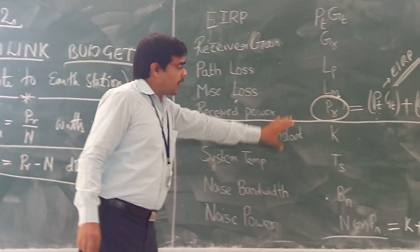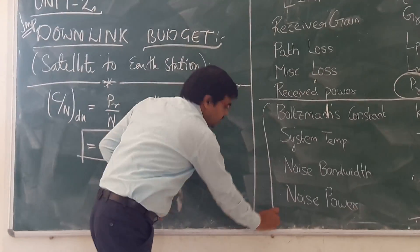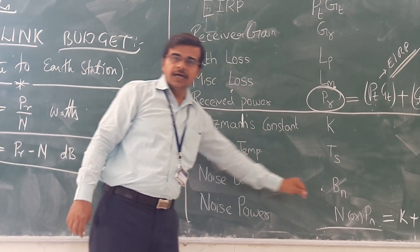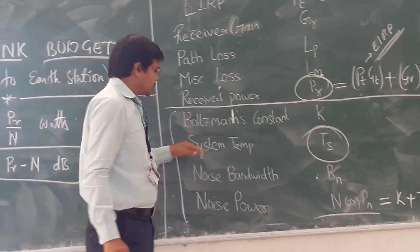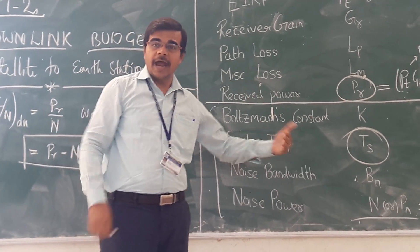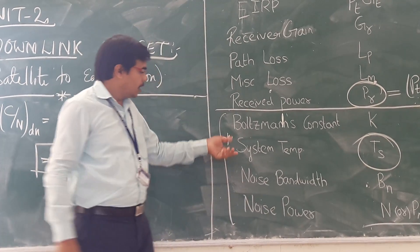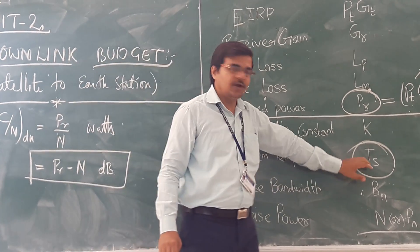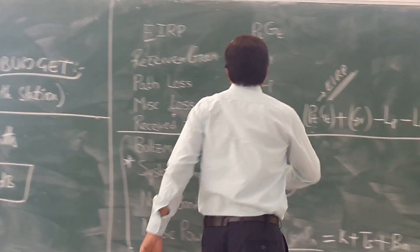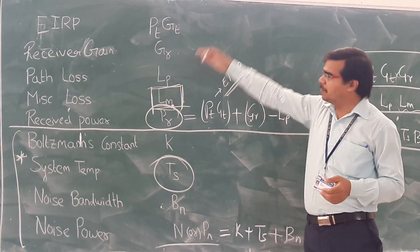Let us see which parameters change when going from the uplink budget to the downlink budget. Boltzmann's constant remains constant, and noise bandwidth remains the same. The only parameter that changes in the noise power formula is the system temperature. For the received power formula, miscellaneous loss remains the same, but other parameters will change.